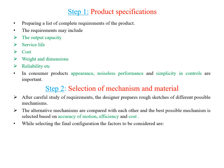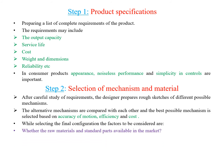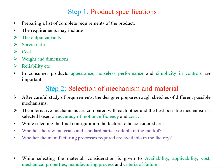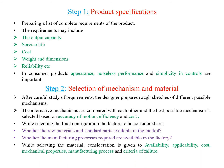While selecting the final configuration, factors to be considered include whether raw materials and standard parts are available in the market, and whether the manufacturing processes required are available in the factory. When selecting materials, consideration is given to availability, applicability, cost, mechanical properties, and manufacturing process.